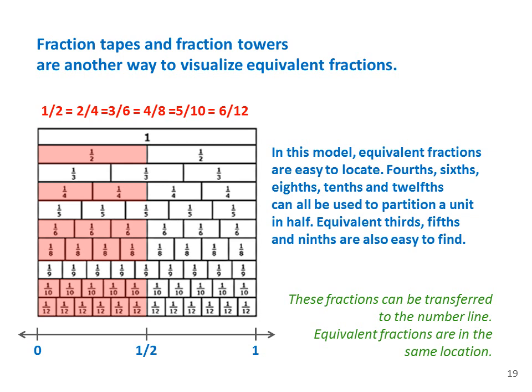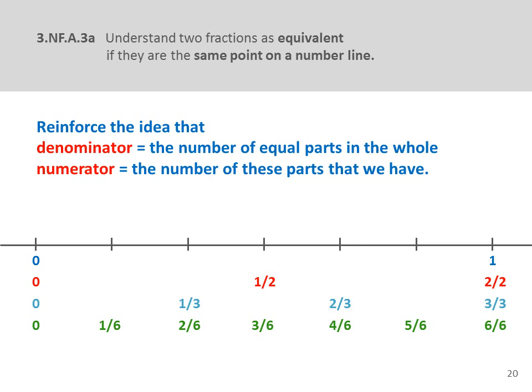Fraction tapes, which can be folded, and fraction towers are another way to visualize equivalent fractions. If we place a number line under a fraction tower, the fractions above can be located on the number line, and equivalent fractions such as 1 third, 2 sixths, or 3 ninths will be located in the same place. The second part of 3NFA3A is to understand two fractions as equivalent if they are at the same point on a number line. Here I've modeled halves, thirds, and sixths on a number line — children can easily see that 1 third and 2 sixths are located at an equal distance from 0. I would have children use number line tapes they can fold into equal portions to reveal equivalent fractions.